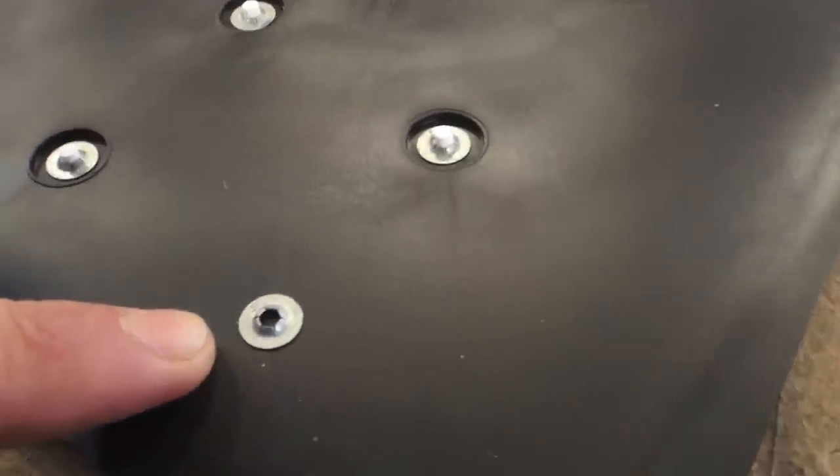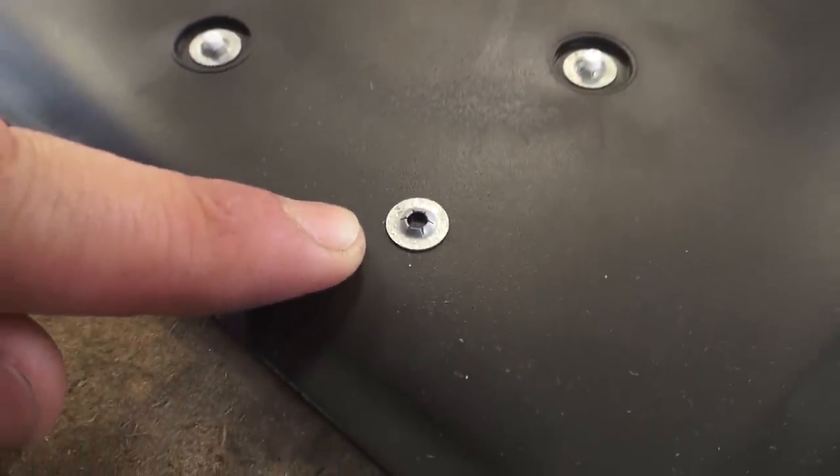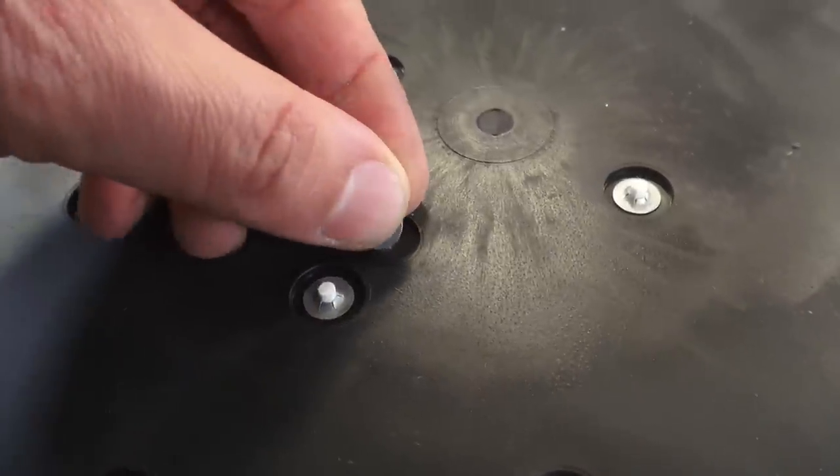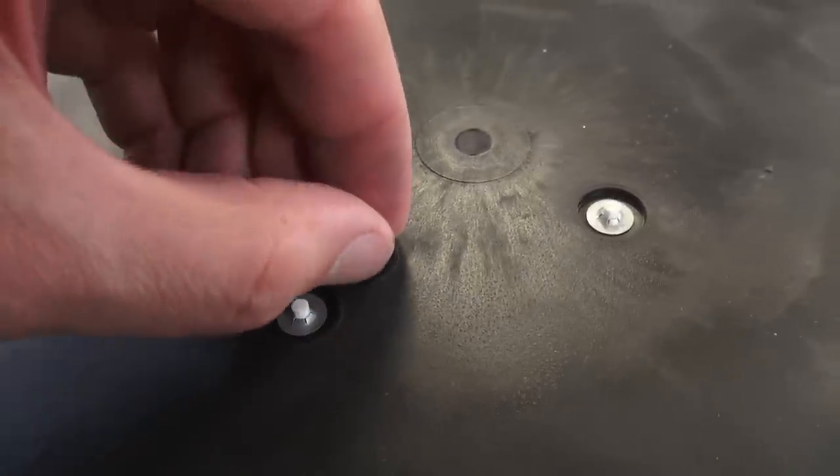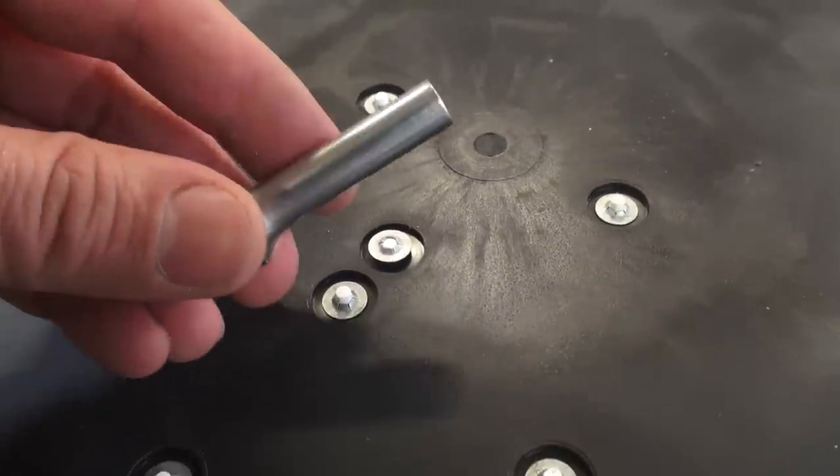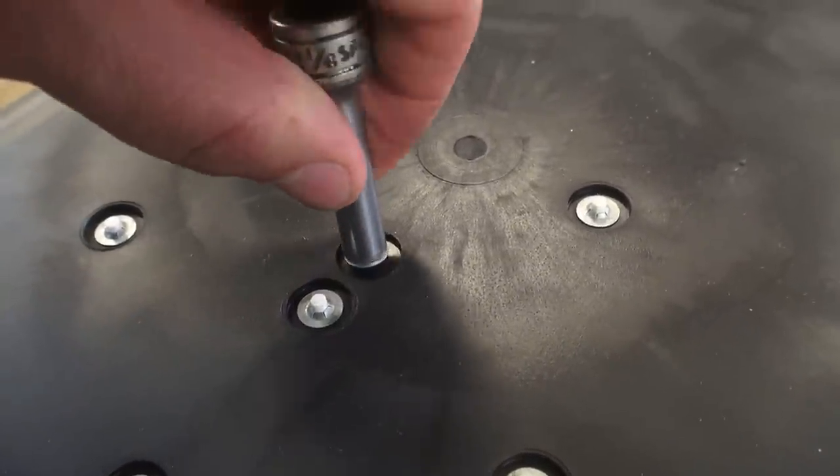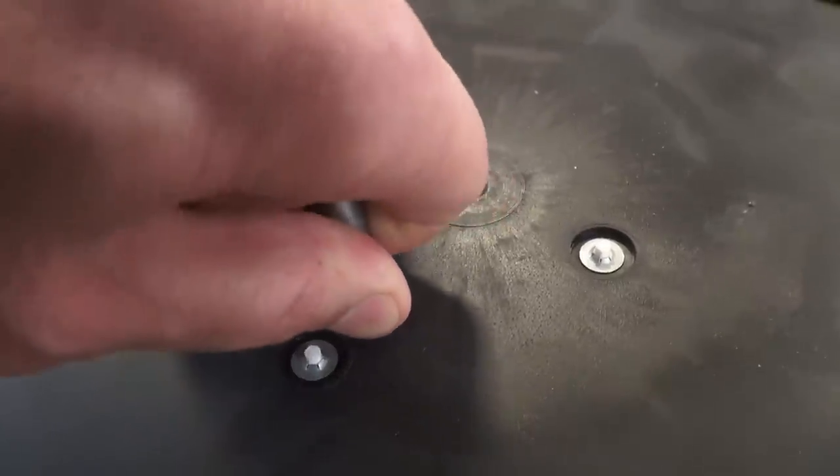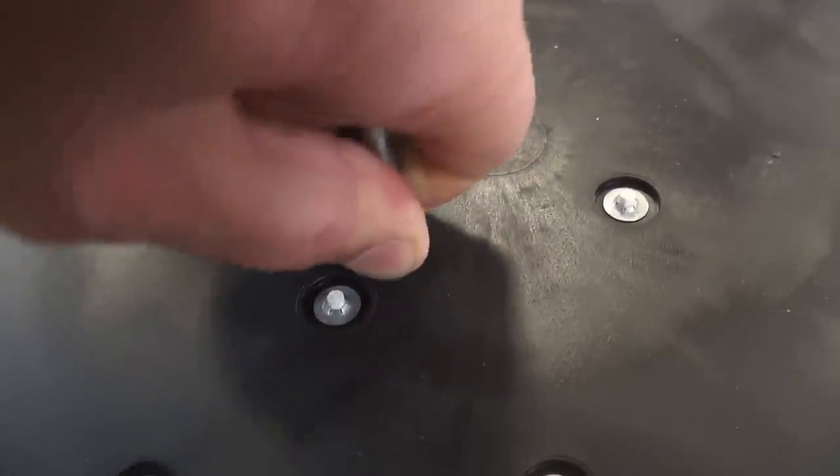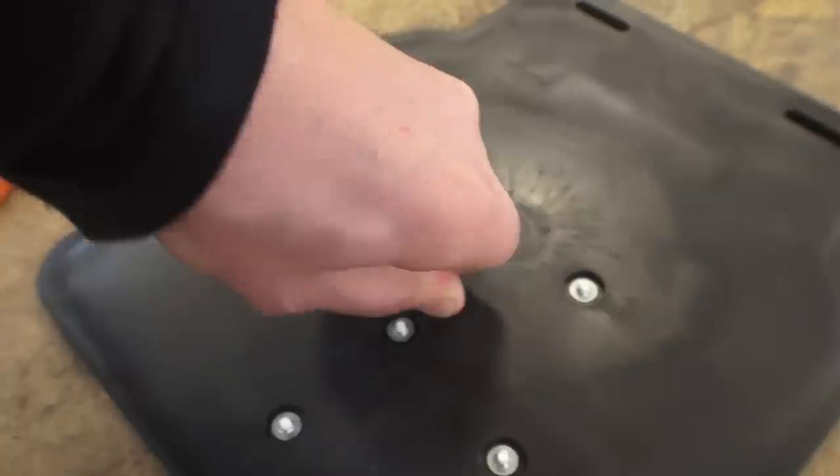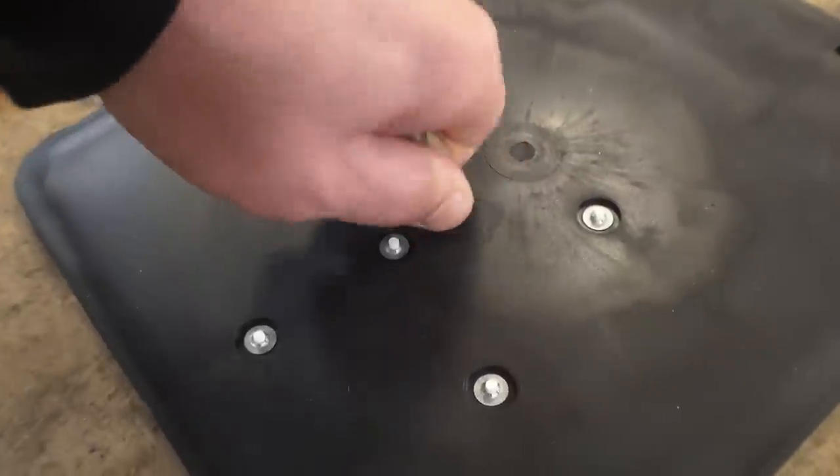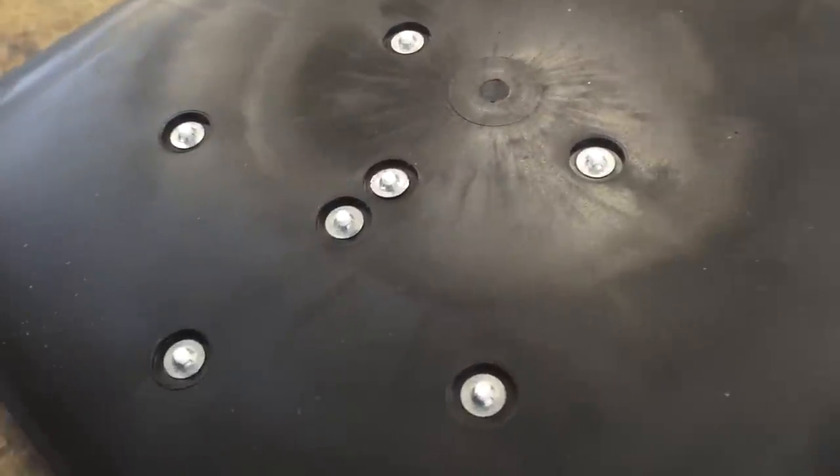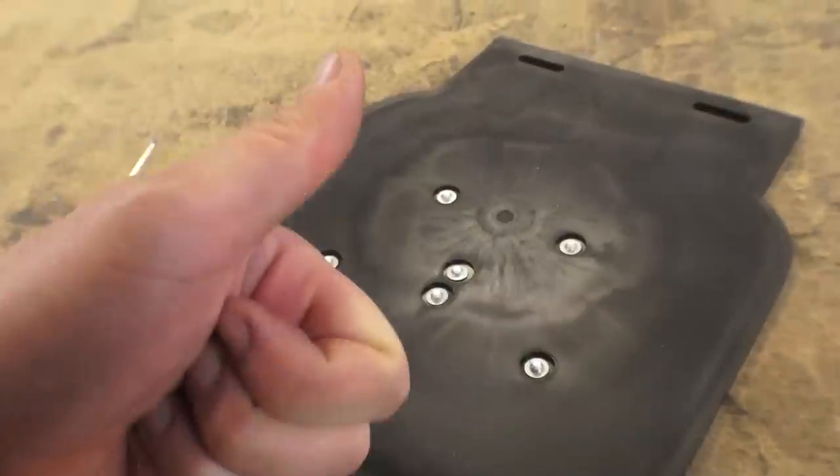And then you get those one way fasteners. They only go on one way and it's really tough to get them off so once they're on, they're on. And you put that over the little tab poking out. Get the deep wall socket again and push down. Now you can use a little hammer if you want to tap down on the top of the socket just to fasten it down. But I usually just push down and it goes down okay.